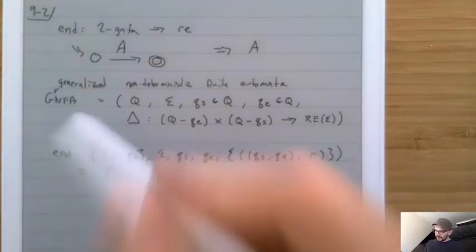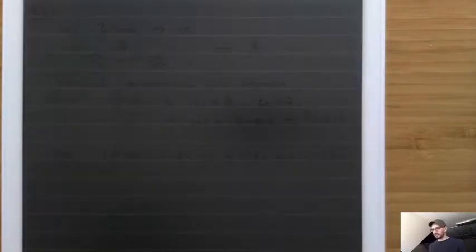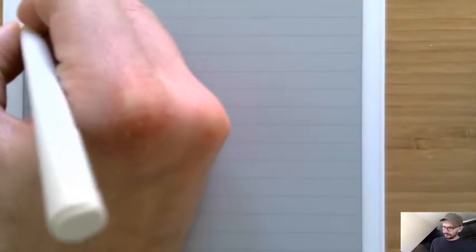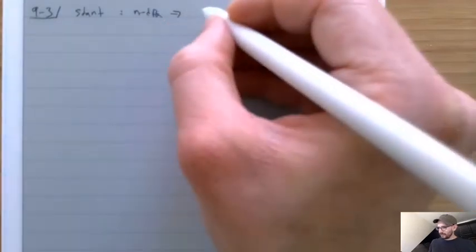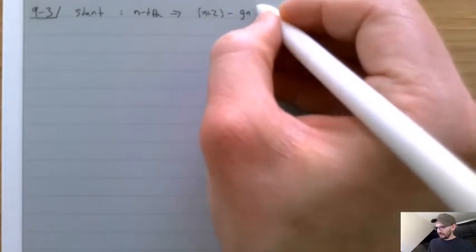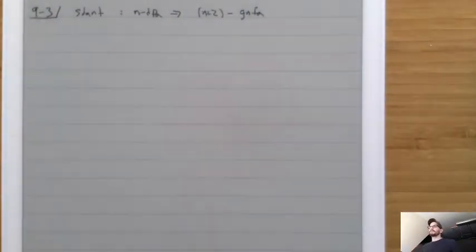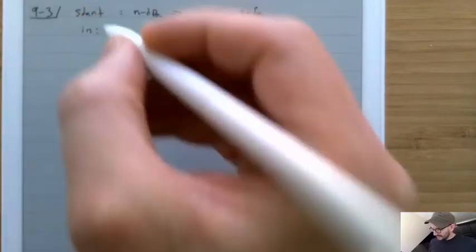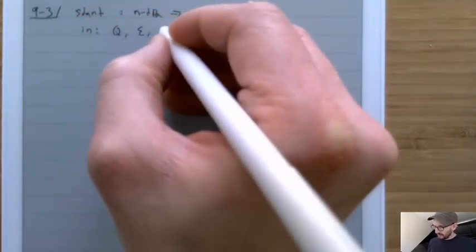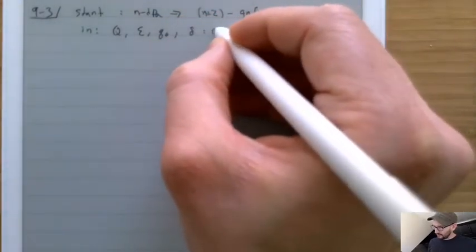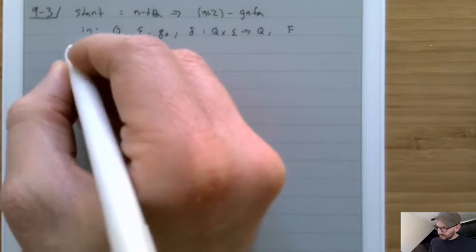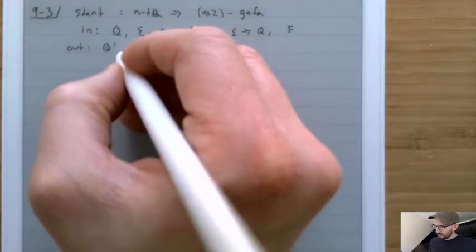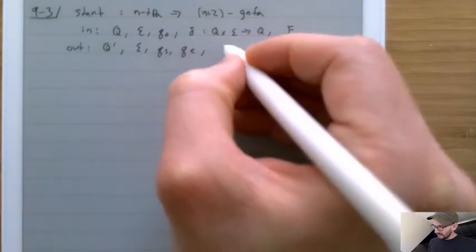Now that we know what a GNFA is and how end works, let's look at how start works. Start takes an N-state DFA and returns an N+2-state GNFA. Its input is a DFA: (Q, sigma, Q0, delta from Q × sigma → Q, F). Its output is a GNFA: (Q', sigma, QS, QE, Delta'). Q' is just Q plus two new distinguished states QS and QE.